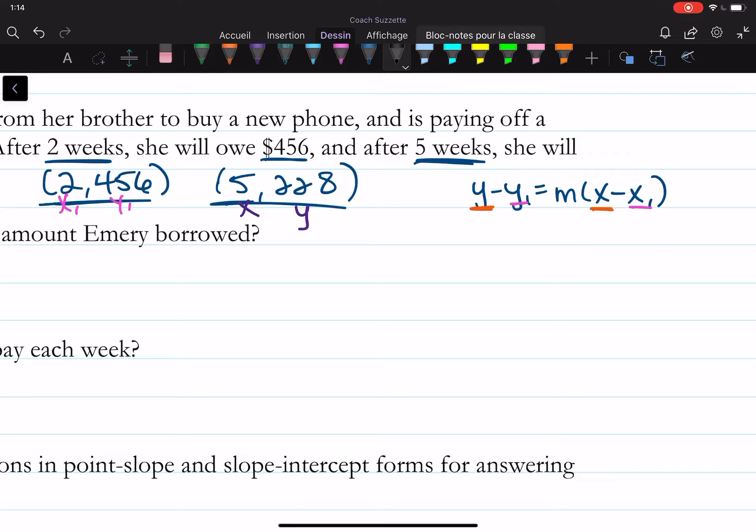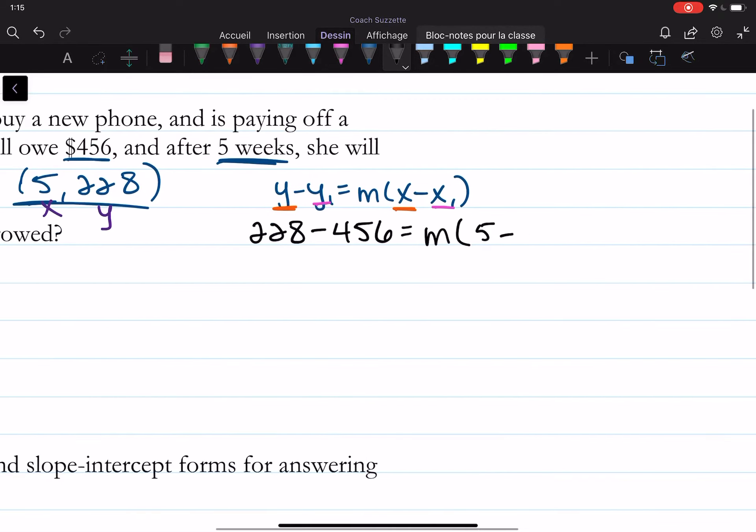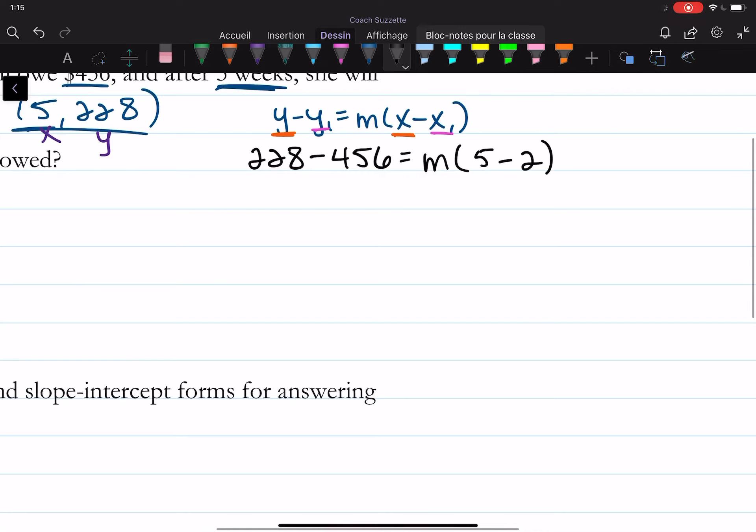So the y is 228 minus my y-sub-1, which is 456, is equal to m times the quantity x, which is our 5 minus our x-sub-1, which is 2. Okay, and then we have 228 minus 456 is negative 228, is equal to m times 3.